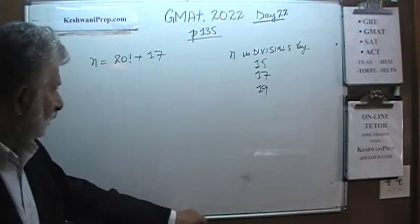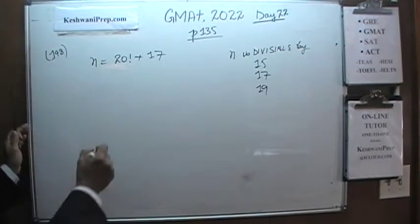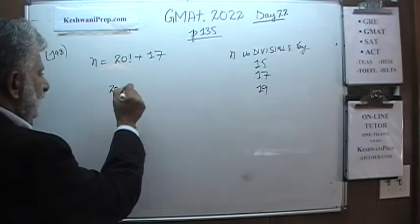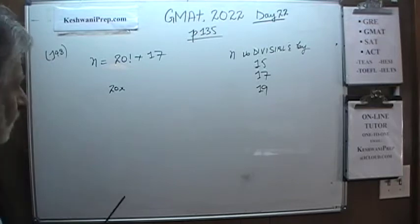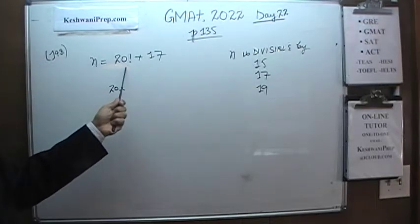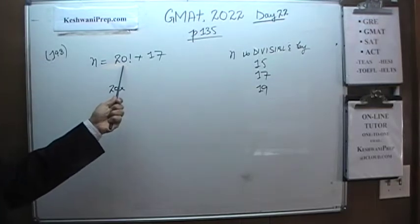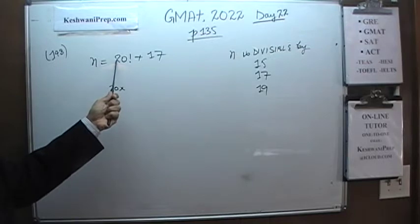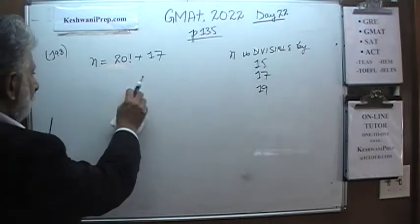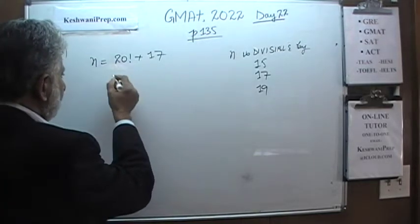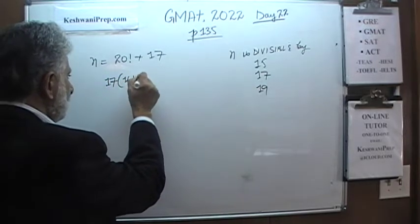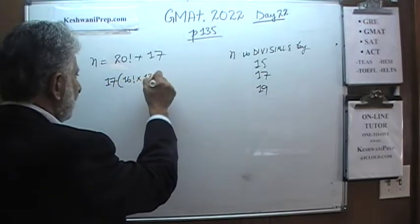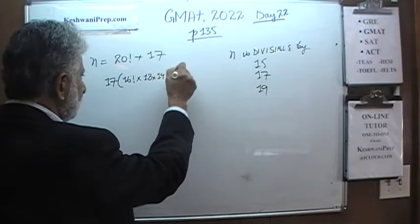20 factorial, as we know, is made up of 20 times 19 times 18 and so on. Therefore, if you were to take 17 out of it, you can see this thing is a multiple of 17 — it's 20 times 19 times 18 times 17 and so on. So 20 factorial can be written as: we take the 17 out, and it becomes 17 times 16 factorial times 18 times 19 times 20.